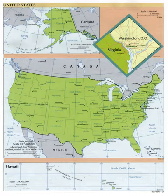Population centers may be organized into incorporated cities, towns, villages, and other types of municipalities. Municipalities are typically subordinate to a county government, with some exceptions. Certain cities, for example, have consolidated with their county government as consolidated city-counties.